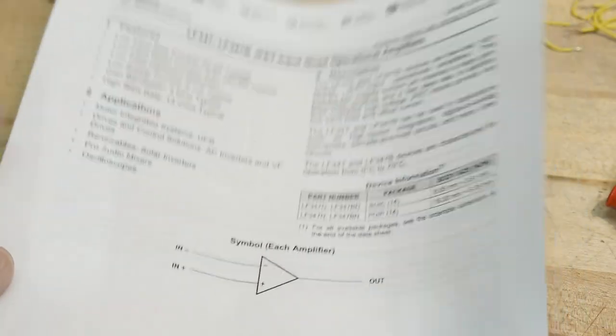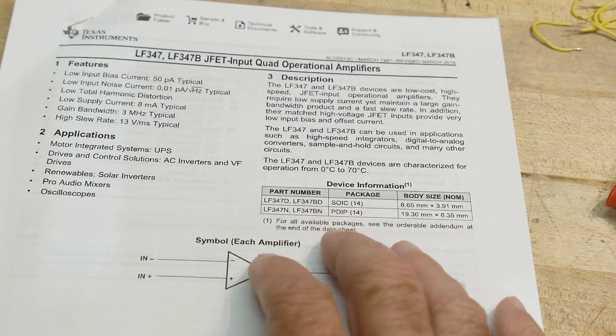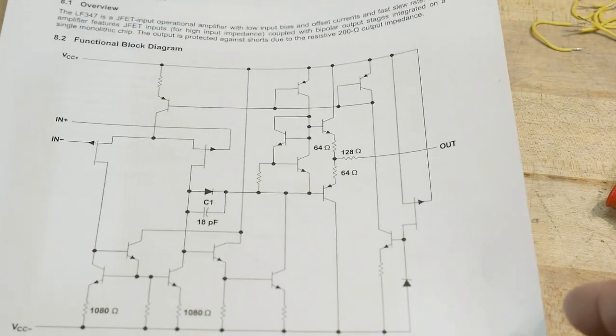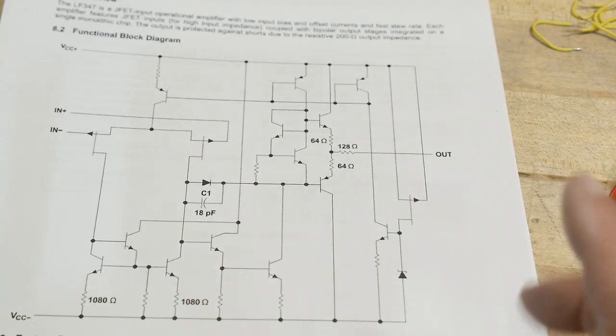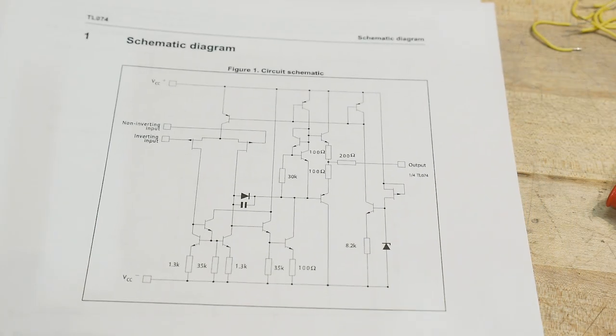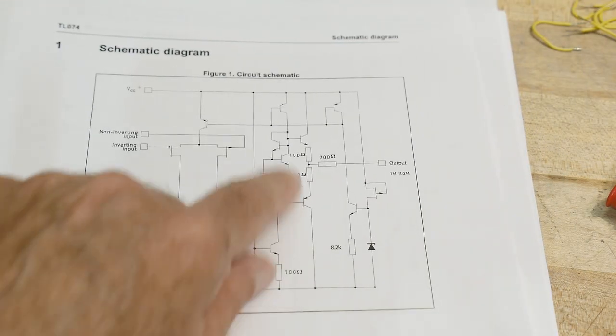So in looking at this, I went ahead and printed out the schematic. They give you a schematic, or a close schematic, and then I printed out the 074, the TL074 schematic. It's hard to get them both on camera, but it's exactly the same circuit, a few changes in values.